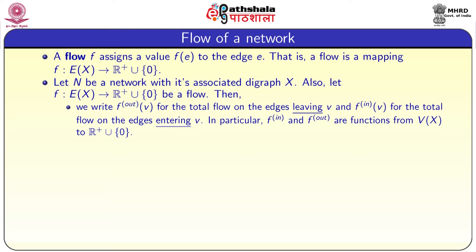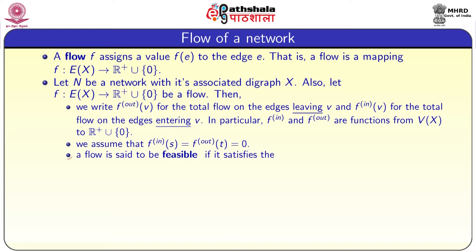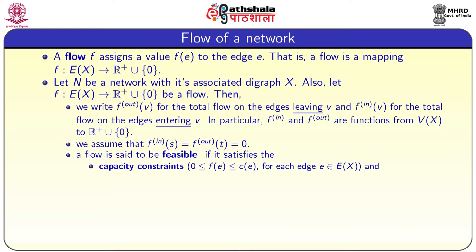From a given flow function on edges, we create new functions from the vertex set to non-negative real numbers. We assume that f-in(s) equals f-out(t) equals 0. A flow is said to be a feasible flow if it satisfies the capacity constraint: 0 ≤ f(e) ≤ c(e) for each edge e of X.